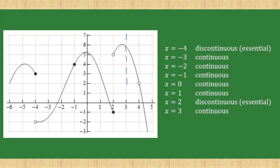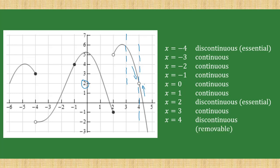For x equals 4, the limit exists because the left-hand and right-hand limits agree on the value, which is positive 2. However, there is an open circle and no closed circle to replace it. So this is discontinuous — removable. That is how we determine the continuity of a function using its graph.